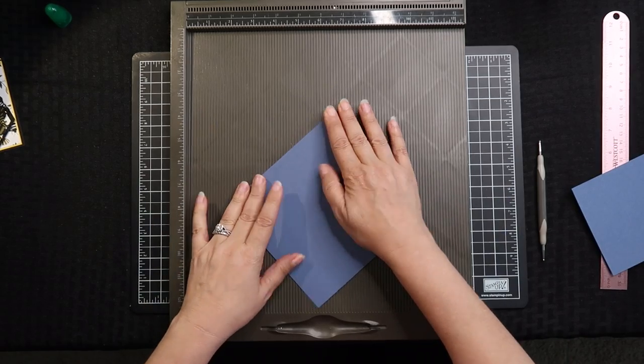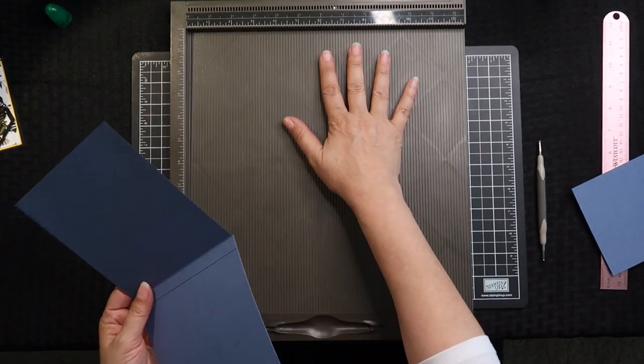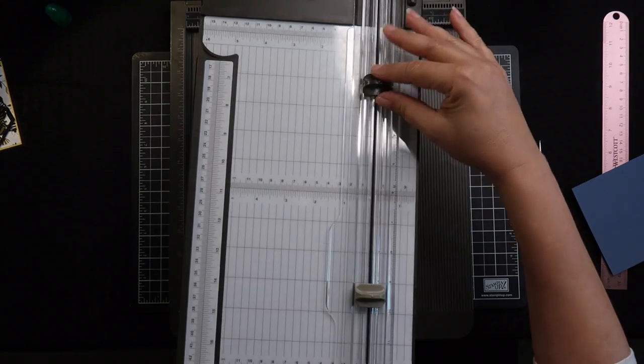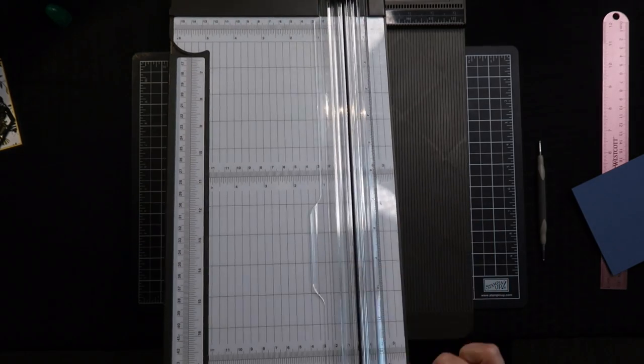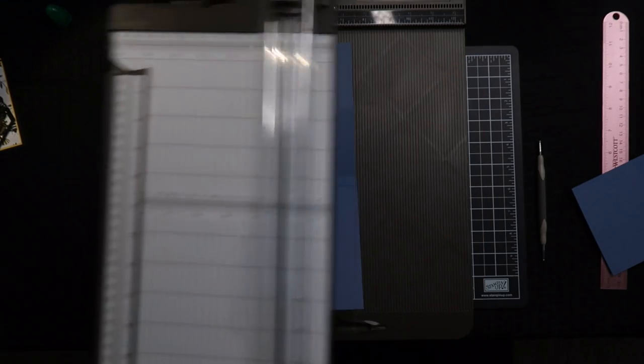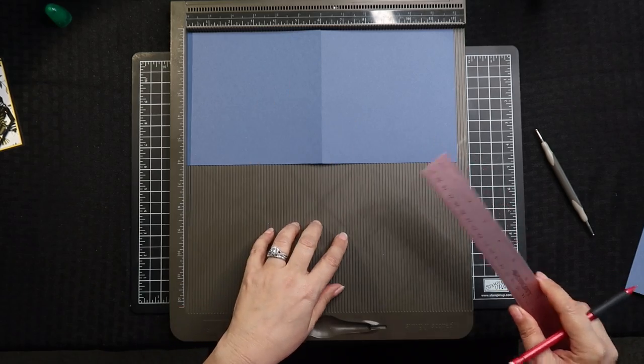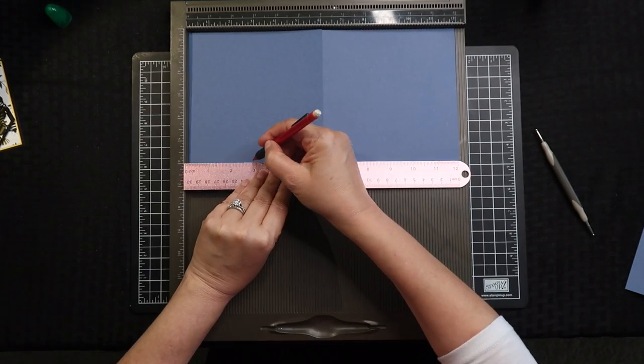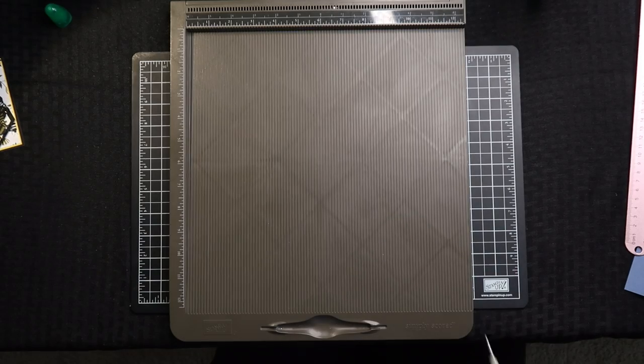Then if you don't have a score tool and you have the Stampin' Up cutting tool, you can use your scoring tool here and use that. So if you don't have this scoring tool, you can get a ruler and pencil and just do marks like this.